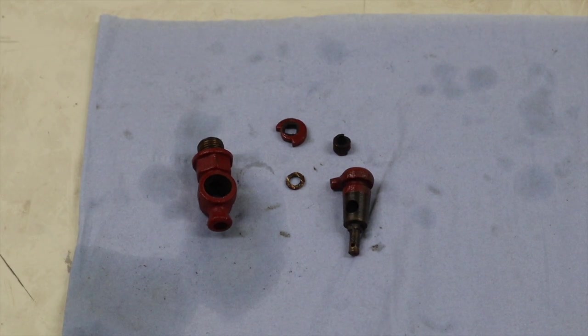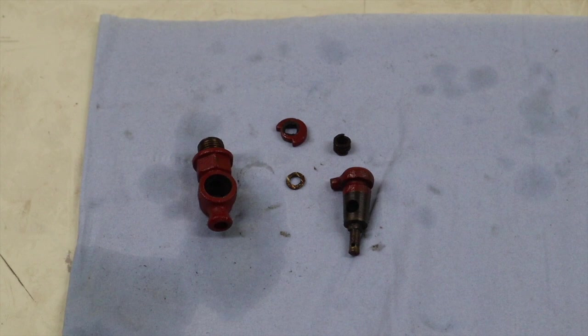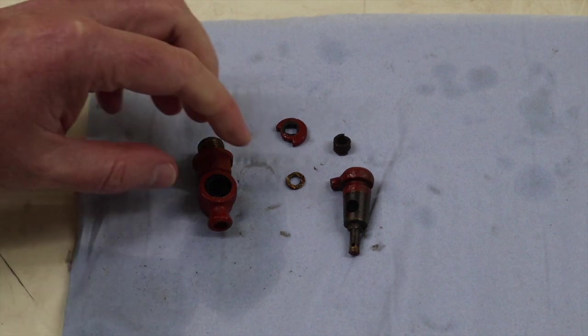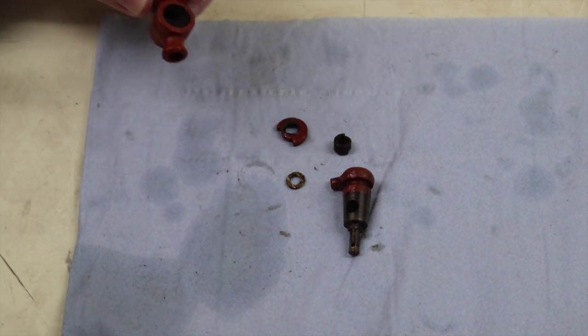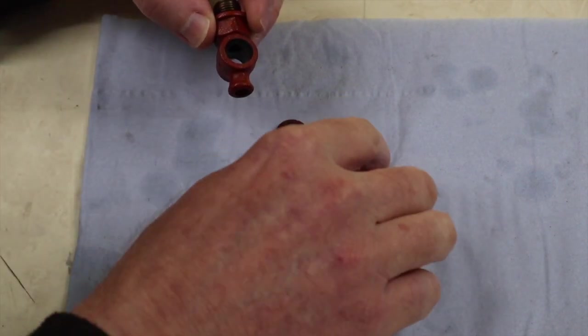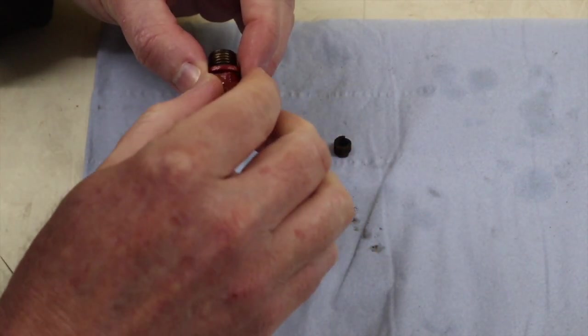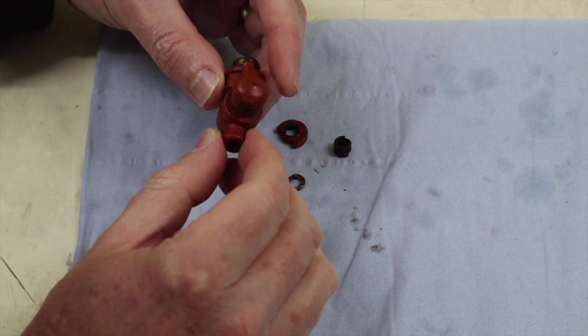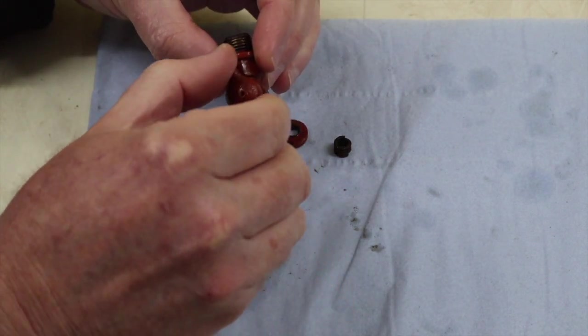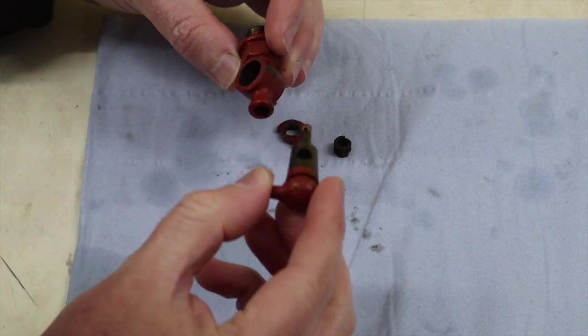Hi everyone and welcome back to Waterhouse Ford. Today's video is going to be probably a very short video. We're just dealing with the tap that sits on the side of the block of the engine and is designed to allow you to drain the coolant out of the engine.